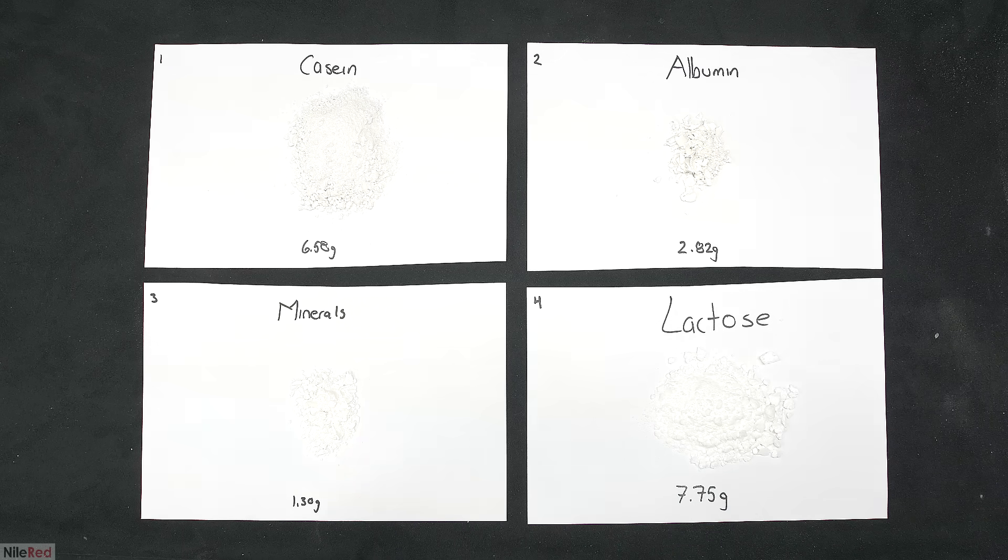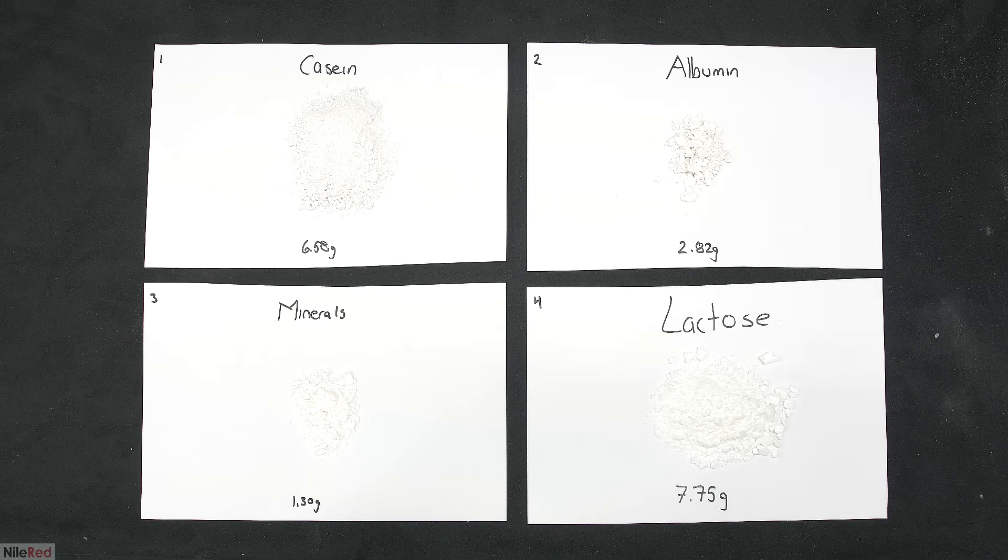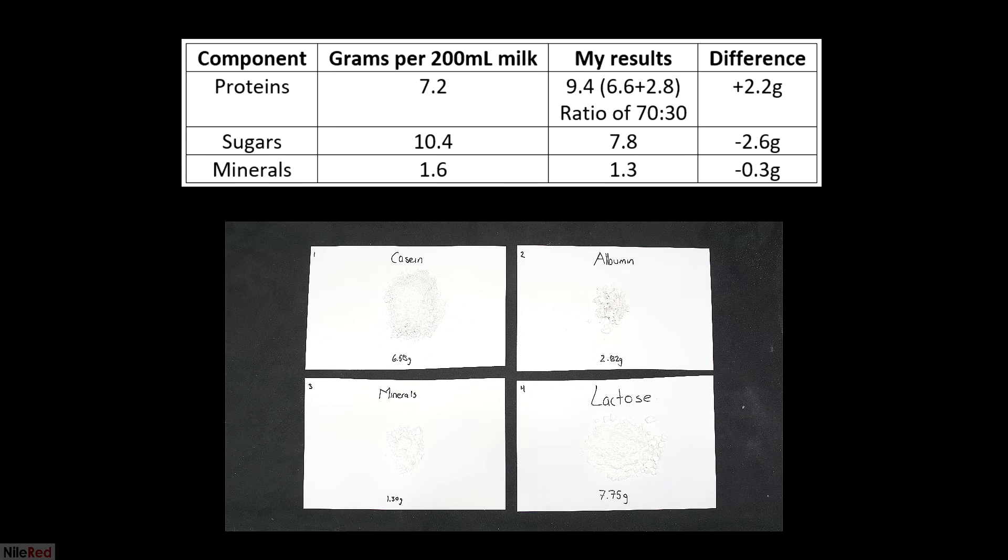The number at the top left corner of each paper just represents the order that they were isolated in. With everything isolated, I can compare my results with the average composition of skim cow milk. Casein is associated with a lot of lactose and minerals, so it makes sense that the mass I recovered is higher than expected. The ratio of casein to whey protein in cow's milk is about 80 to 20, but what I got was closer to a 70-30 split. The mass of the whey protein is buffed up a little bit due to unreacted calcium carbonate. The lactose that was recovered was about 2.6 grams less than expected. I imagine that most was lost in the casein, and some probably stayed dissolved in the ethanol. The minerals were also less than expected, but again, most of the missing stuff is probably stuck in the casein.